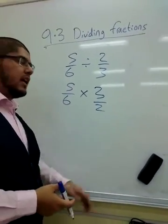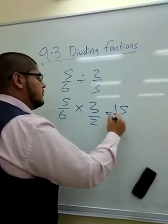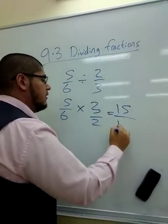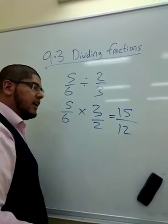Now we can just multiply the numerators, which is 15, and the denominators, which is 12.